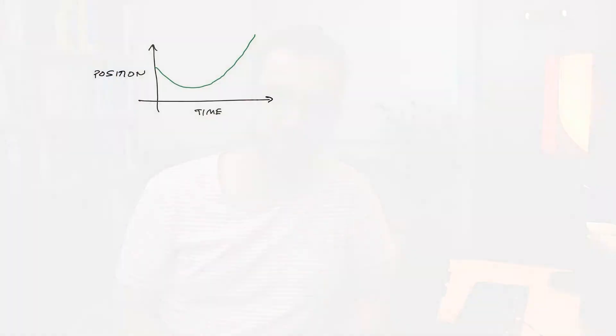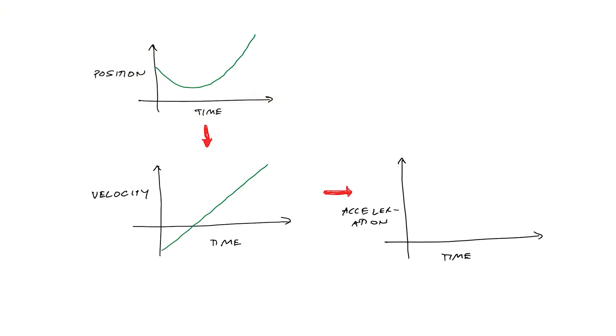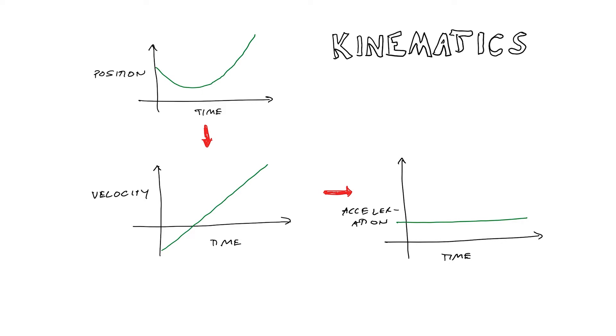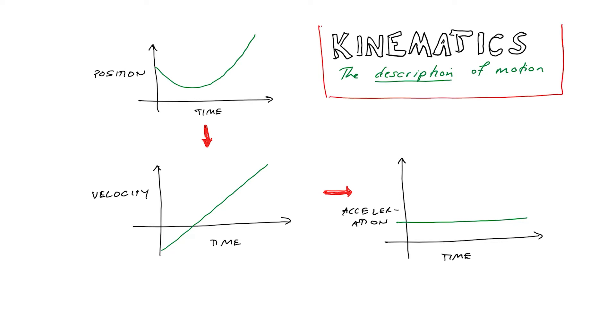There are some concepts that are part of this vocabulary of describing motion, such as position, velocity, and acceleration. They're all part of the first area of physics we're going to study in this course, which is called kinematics. In this lesson, we're going to look at the first building blocks of kinematics. We're going to focus on motion in one dimension, just to keep it simple, and we'll look at displacement and distance. One dimension just means our car is limited to moving in a straight line.